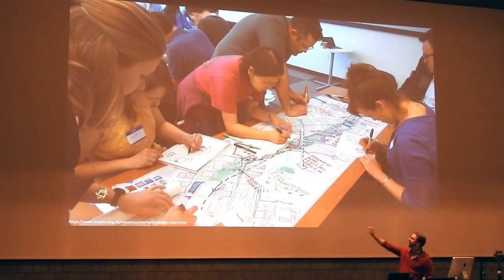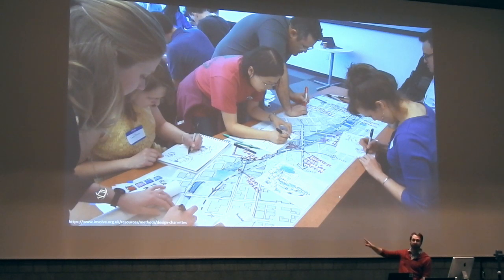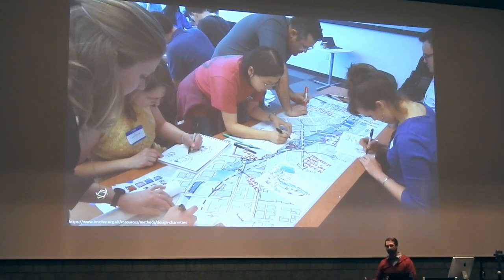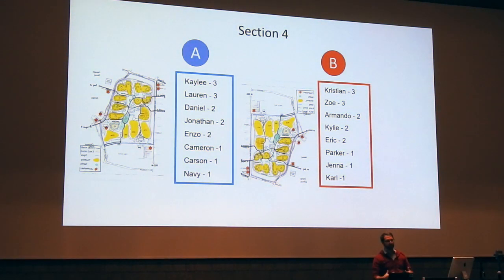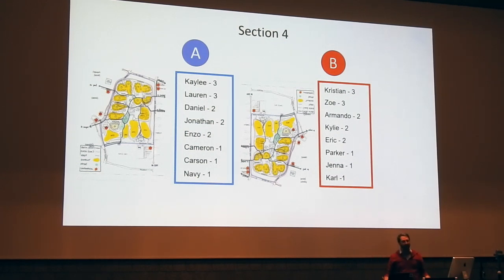You're trying to distill lots of information into a single point — to get your point across. After you work in your segment group, you'll be re-divided into master plan teams. Together, master plan team A will be stitching together all three segments of the river to make one giant master plan. You'll need to communicate what's important about your segment to your master plan team. This creates divergent thinking — one group focused on one aspect, another on a different one.